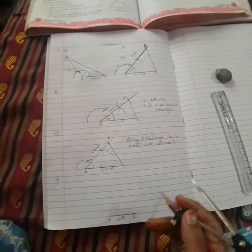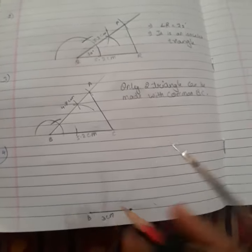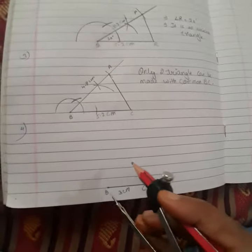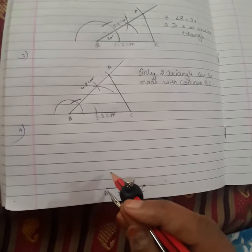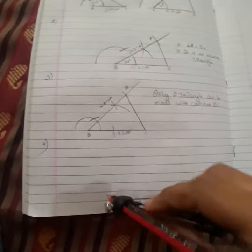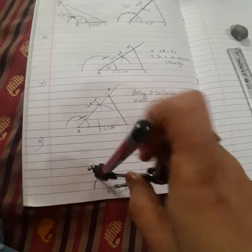So I am taking the base as BC, 3 centimeter. Now from here you will make one 90 degree angle at B. For this, first make an arc.